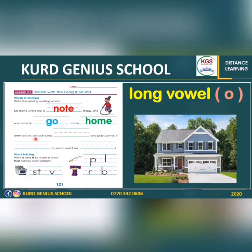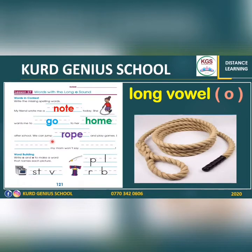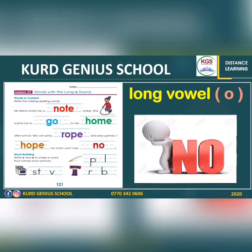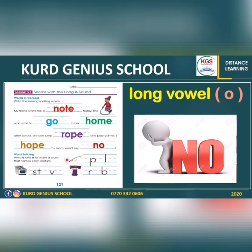Continuing the text: 'We can jump rope and play games' — so they want to jump rope then play some games. 'I hope my mom won't say no' — that means she wants her mom's permission to go to her friend's house. Fill in the blanks as I have done. As you can see, all the words have long vowel O: note, go, home, rope, hope, no.